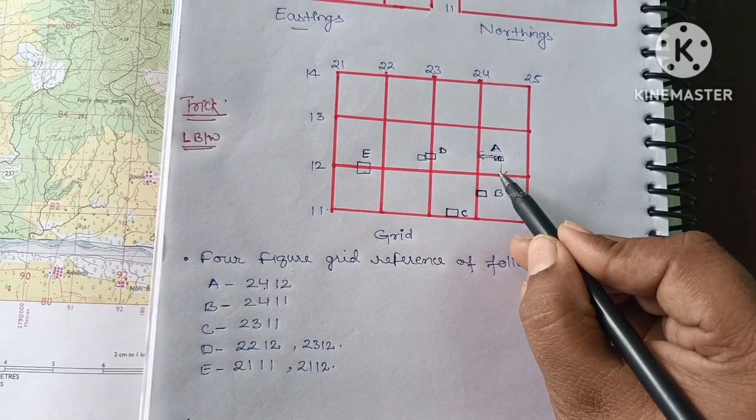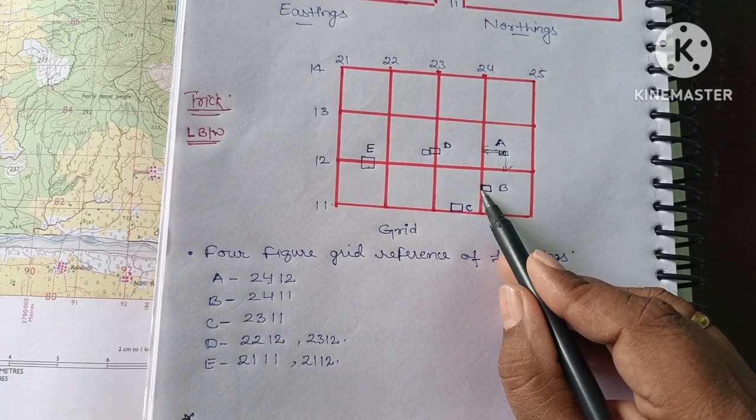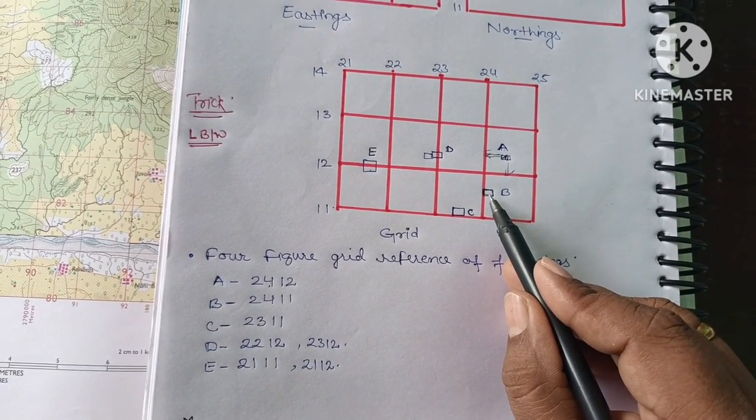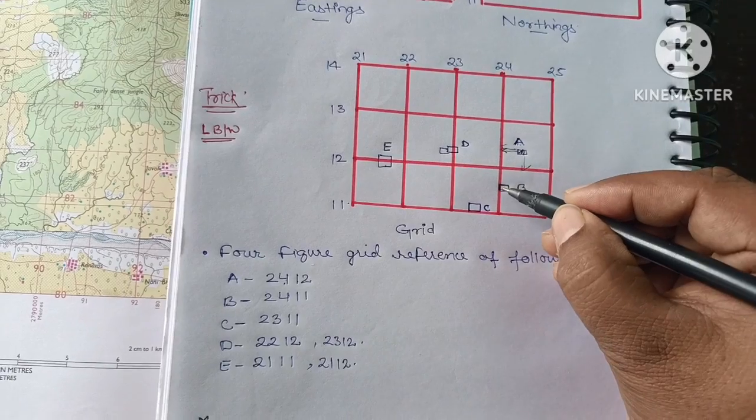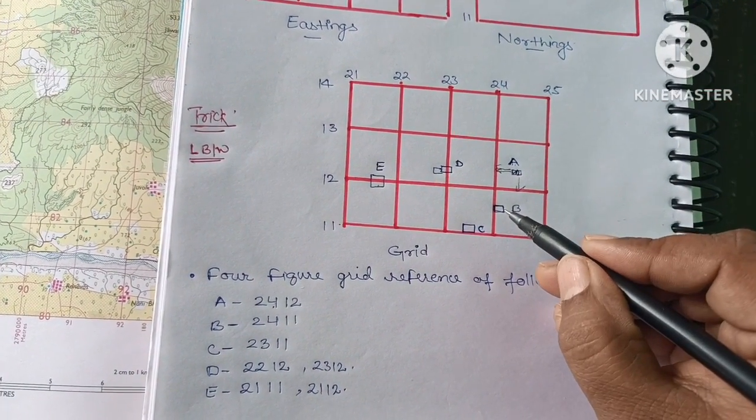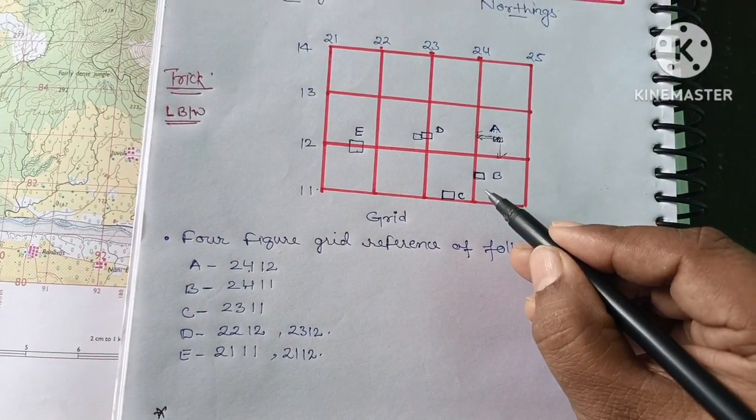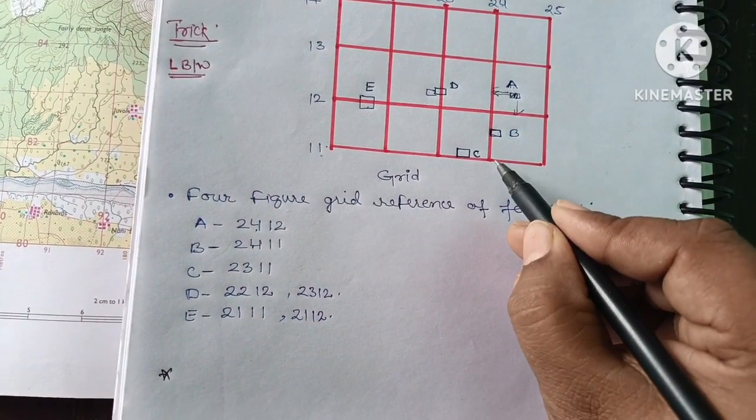If suppose it is B point here on the mark, then here you will write the four-figure as 2411. This is the touching line. So this is the vertical line that is left line. So its value is 24. And the bottom line is 11. So it is 11 here.